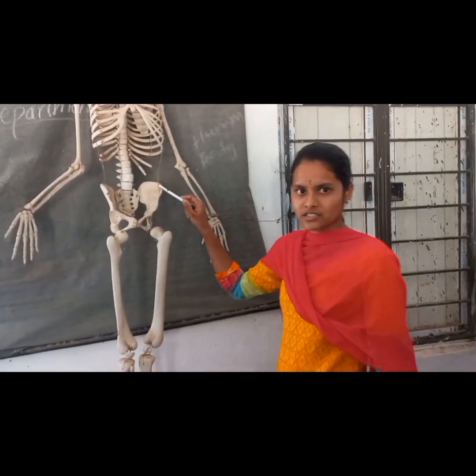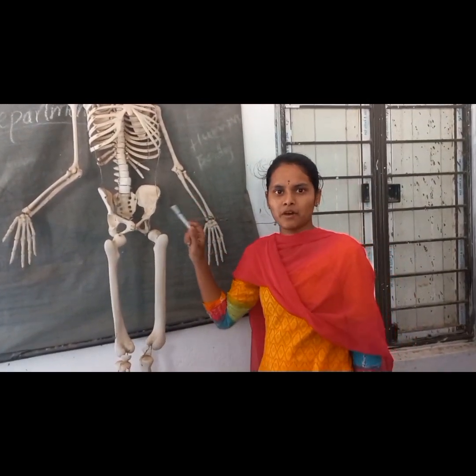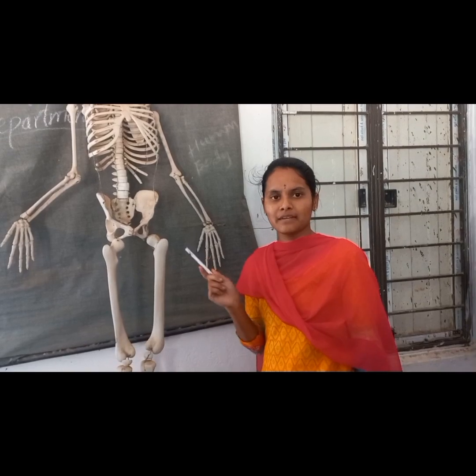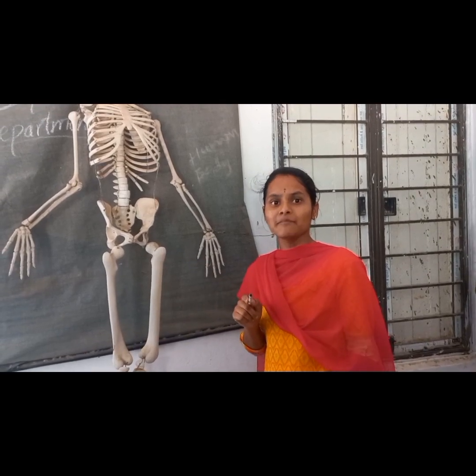Each coxal bone is made up of three bones: ilium, ischium, and pubis.